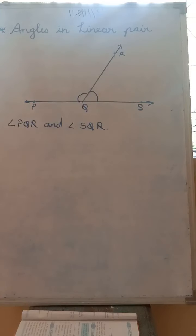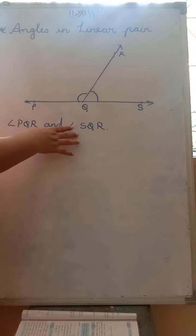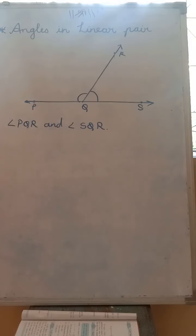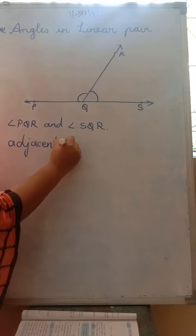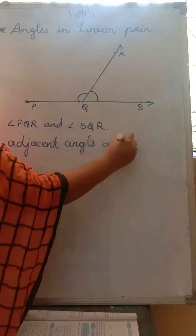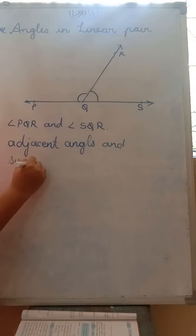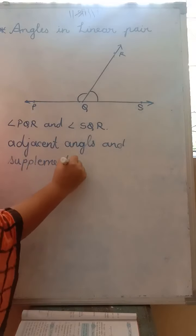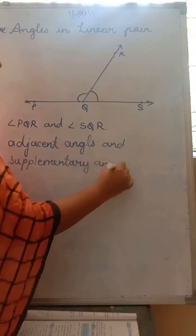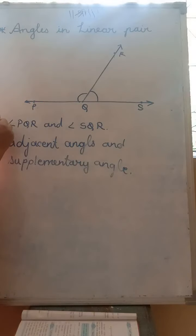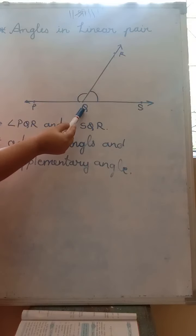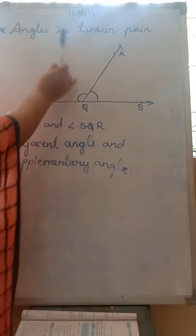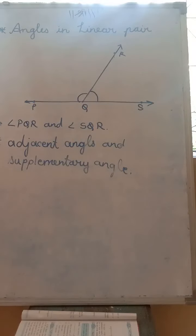So what type of a pair of angle is it? These two angles form which pair? The above angles are forming the pair of adjacent angles and supplementary angles. Because here it is having common ray QR, it is having common vertex, and these two angles are having separate interior. So they are adjacent angles.